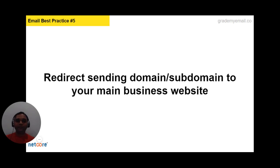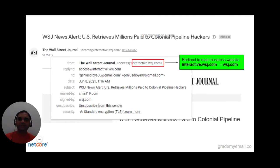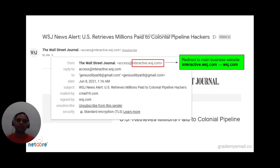The fifth important email best practice is to redirect all your subdomains to your main business website. Make sure there is no test page or 404 page coming up on the subdomain you are using as a sender in your email. This gives more trust both to your recipients and to the recipient mail server. For example, the subdomain interactive.wsj.com should be redirected to its primary domain wsj.com — also referred to as the organizational or main domain.